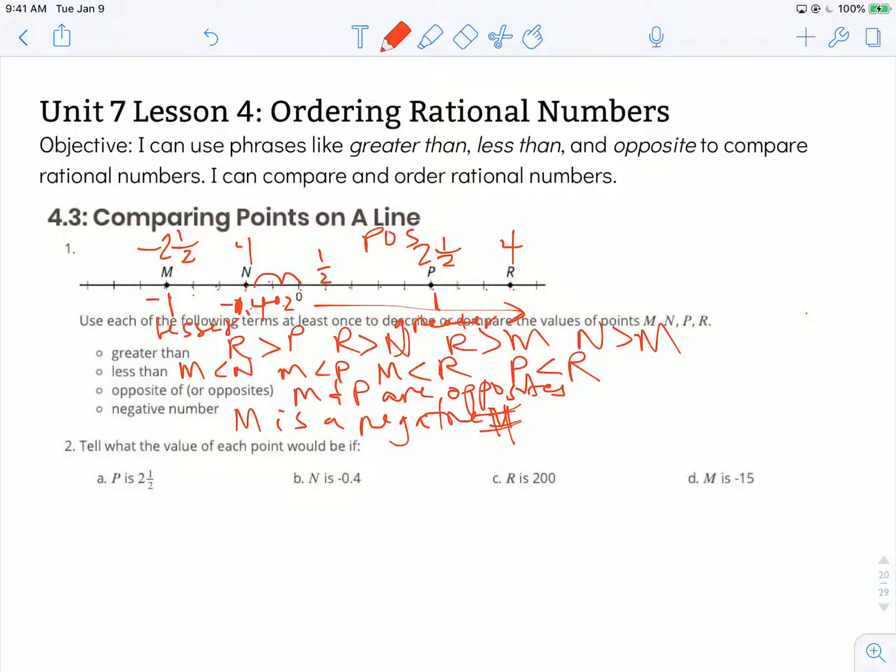If I know that M is negative one then P must be positive one and then I'll continue to count by two tenths at a time. One point two, one point four, one point six, one and six tenths to be more precise with my language, if N is equal to negative four tenths.